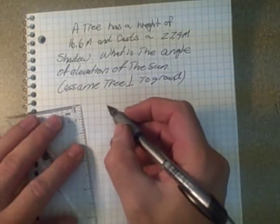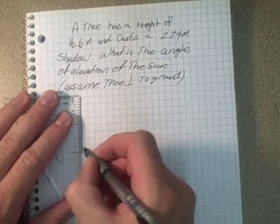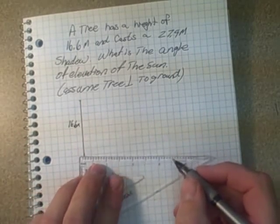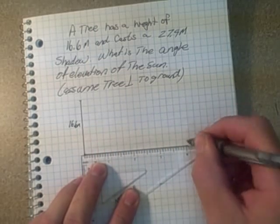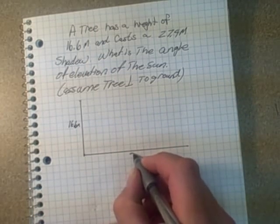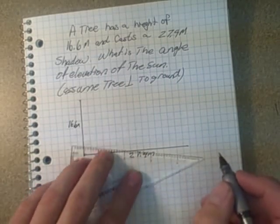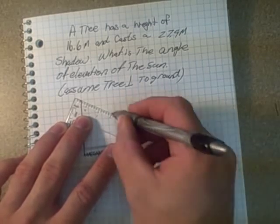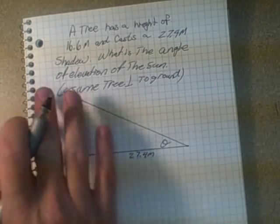So let's draw a picture. So here's my tree. And this would be 16.6 meters. Here is my shadow cast on the ground. And that is 27.4 meters. And we want this angle on the bottom here. This angle of elevation of the sun. There's the sun shining in there.